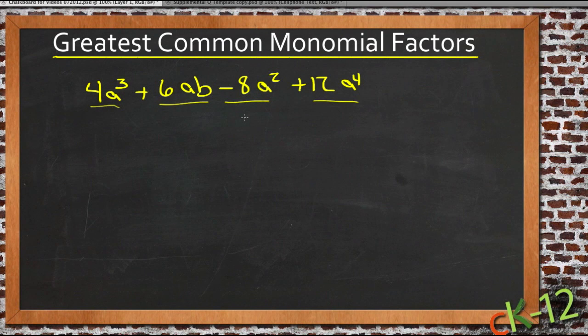Sometimes there's more than one thing that you can pull out. For instance, I can see that 4, 6, and -8, and 12 would all divide by 2, so let's pull that 2 out first.